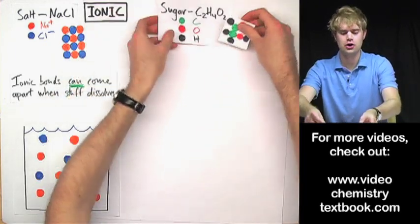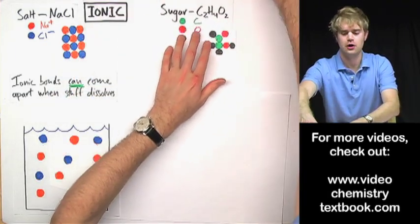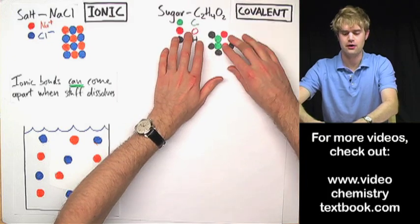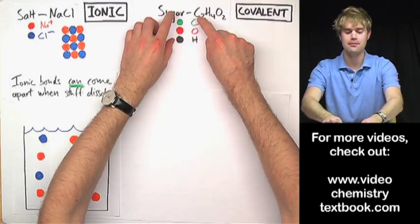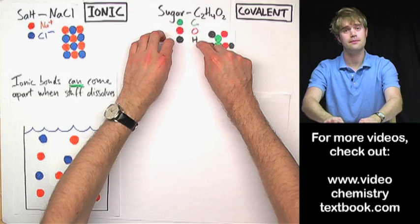But we are talking about sugar here. And sugar is a covalent compound because it's made up of non-metals, carbon, oxygen, and hydrogen.